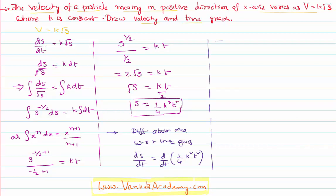dS by dT is nothing but equal to velocity. 1 by 4 is constant, K square is constant. Differentiation of T square is nothing but equal to 2T. So I got a relation: V equals 2K square T by 2, or K square T by 2.